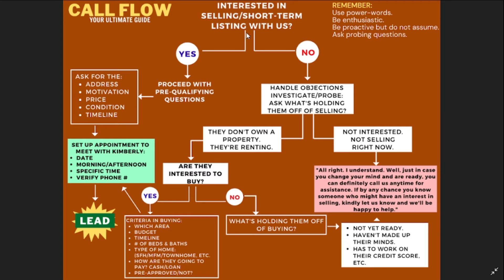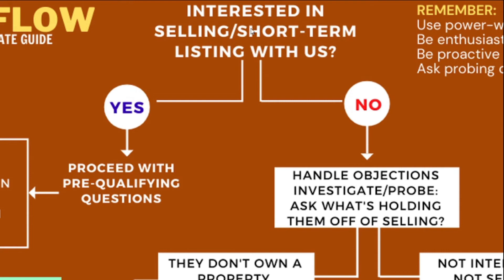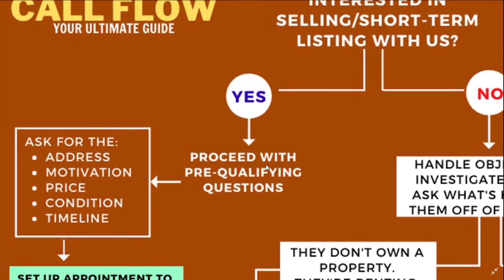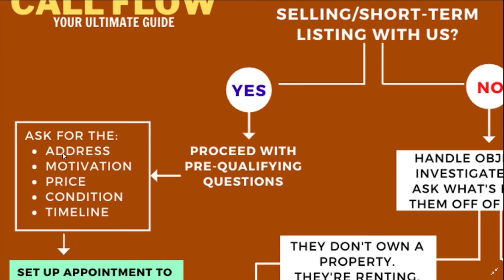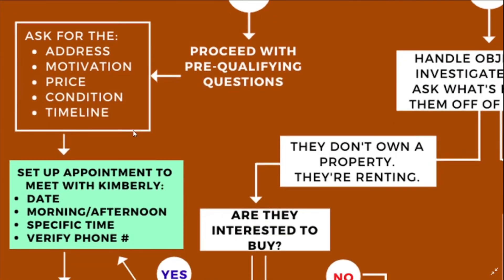Ask them if they have a property for sale or would be interested in a short-term listing. If they say yes, proceed with the pre-qualifying questions: verify the address of the property they want to sell, ask for their motivation and the reason behind selling, ask for their asking price, the condition of the property, and the timeline — when would they want to close. If they provide all of this information, proceed to setting up an appointment to meet with the client you're working with. Get the date, exact time — morning or afternoon — or what time works best for them, and verify their phone number. That's a seller lead already.